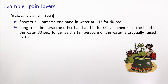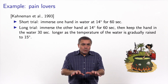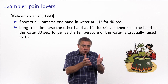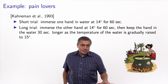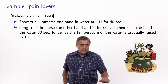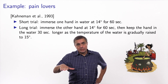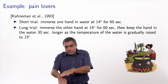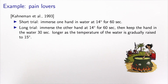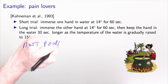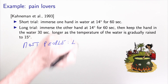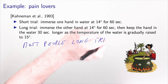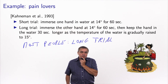Individuals were then asked which trial they preferred — the short trial or the long trial. Think about what you would do: would you choose 60 seconds in cold water at 14 degrees, or 60 seconds at 14 degrees followed by 30 more seconds as the temperature rises to 15 degrees? In the experiment, most people chose the long trial. And now let's think about it from a modeling point of view.